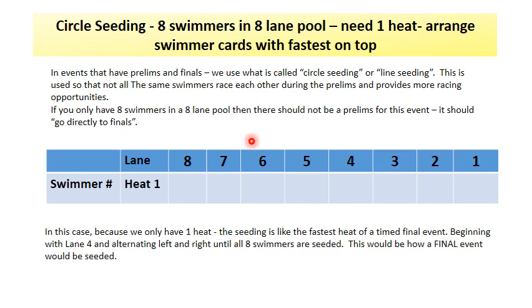In this video we will learn about circle seating. Circle seating is used when a competition has both preliminary heats and finals. Circle seating splits up the fastest swimmers into different heats and allows slower swimmers to race those faster swimmers.